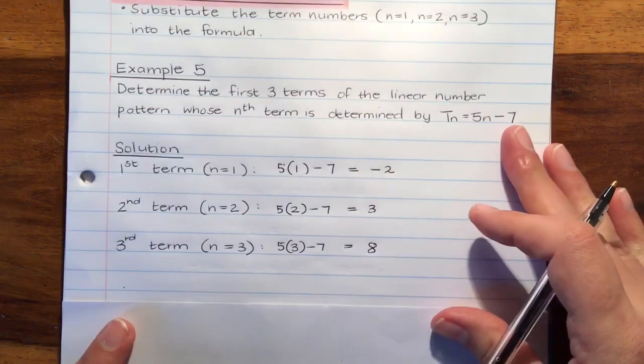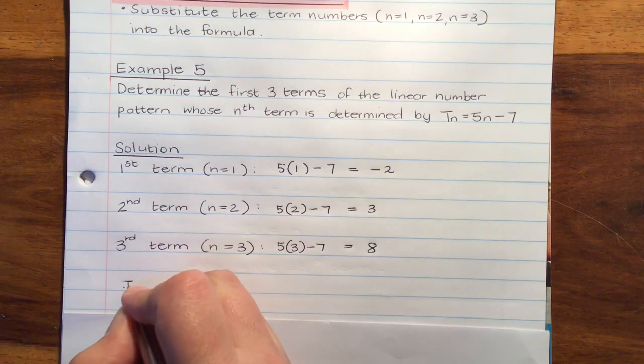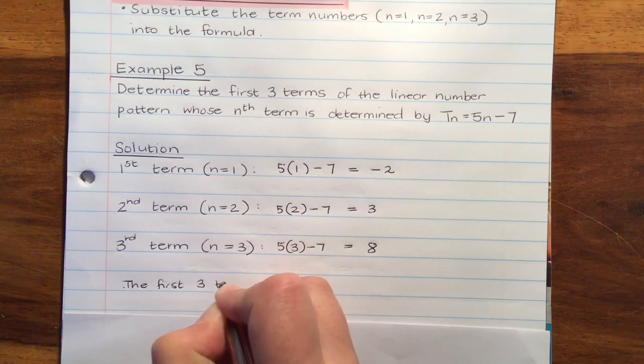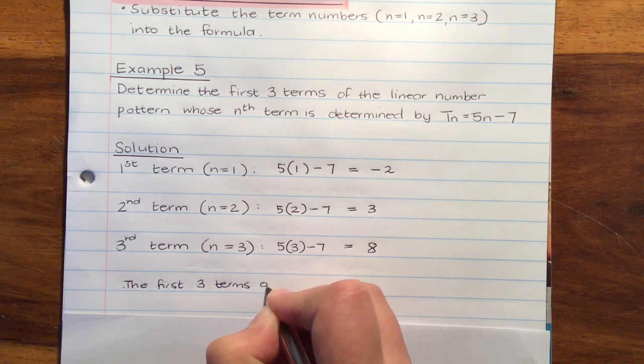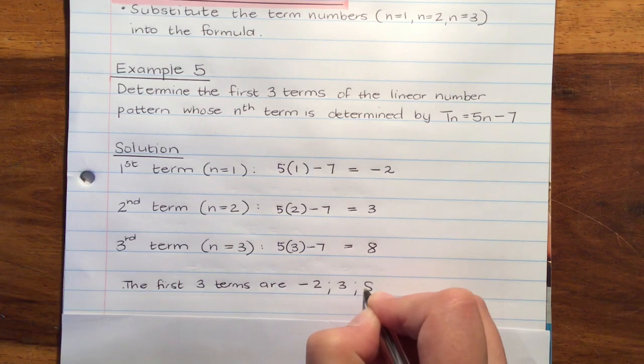So what does that mean? The first three terms are negative 2, 3, and 8.